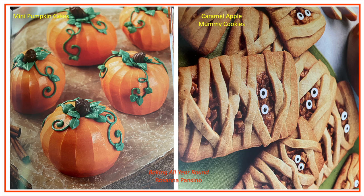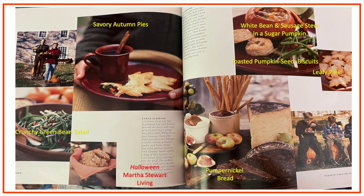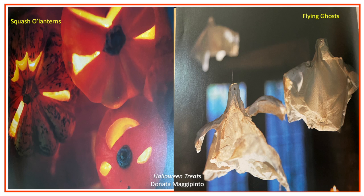Baking All Year Round by Rosanna Ponsino also offers great options. In Halloween by Martha Stewart Living, you're going to find more of a lunch: savory autumn pies, crunchy green bean salad, pumpernickel bread, leafy pies, white bean and sausage stew, sugar pumpkin, and toasted pumpkin seed biscuits. I thought this was very interesting — we see jack-o-lanterns made using squash, a little bit better for little hands to manage. In Halloween Treats by Donata Magipinto, she calls them squash-o-lanterns. And then we have flying ghosts — something eerie you can display in your home or send home with guests.